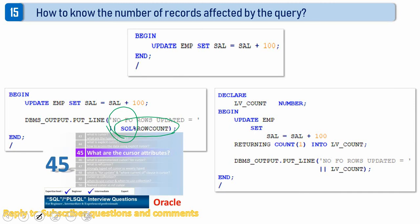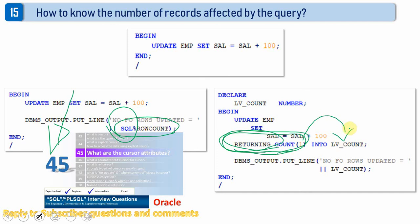I have discussed cursor attributes and how to use them for both implicit and explicit cursors in a separate video. The second method is using a RETURNING clause as part of the DML statement. The intention of the RETURNING clause is to get information about the rows affected by the DML statement. We can use the RETURNING keyword along with aggregate functions like COUNT, MAX, or MIN. In this example, I am using COUNT to find the number of records affected.